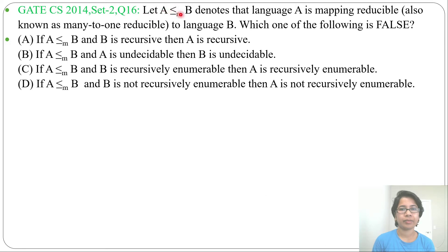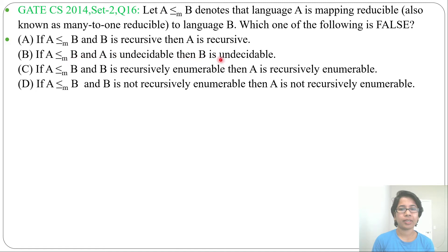Let A reducible to B denote the language A is Mapping Reducible — also known as many-to-one reducible — to language B. Which one of the following is false? Option A: if A is Mapping Reducible to B and B is Recursive, then A is Recursive. Option B: if A is Mapping Reducible to B and A is Undecidable, then B is Undecidable. Option C: if A is Mapping Reducible to B and B is Recursive Enumerable, then A is Recursive Enumerable. Option D: if A is Mapping Reducible to B and B is Not Recursive Enumerable, then A is Not Recursive Enumerable.